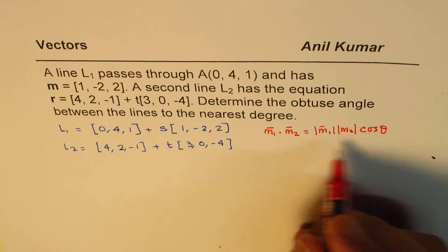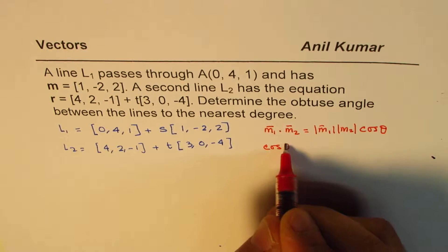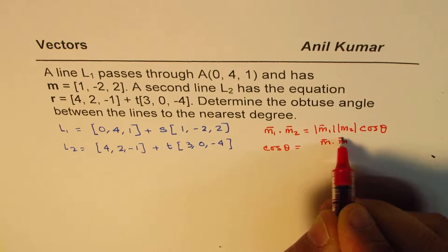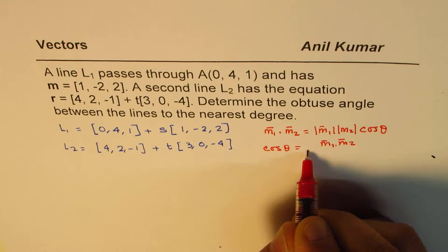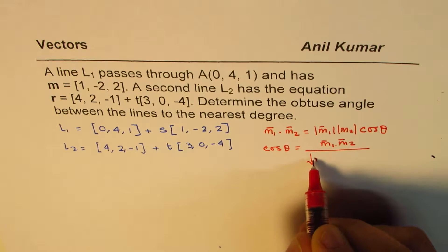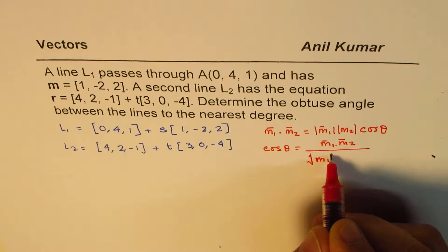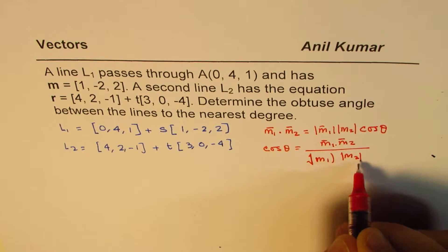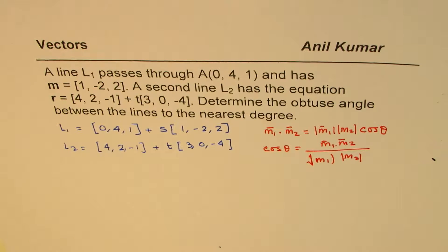So from here, we can always find that the angle cos theta is product of dot products M1 and M2 divided by their product of magnitudes. So we'll just write magnitude here. And of course, inverse of this cosine will give us the angle. So that's the strategy to follow.